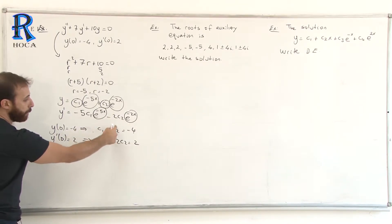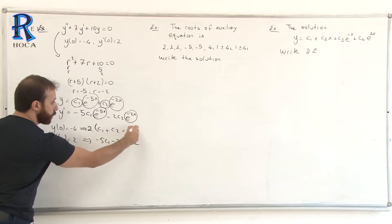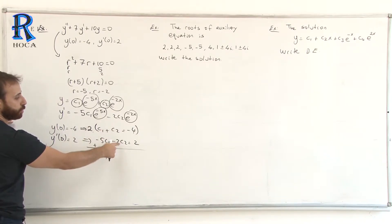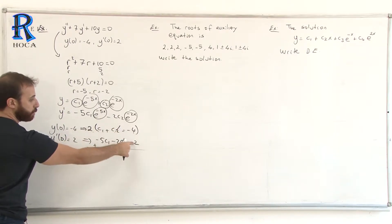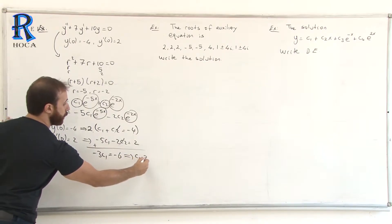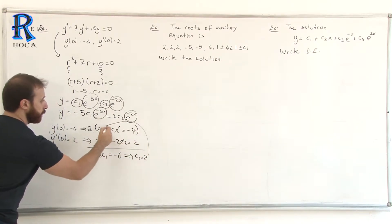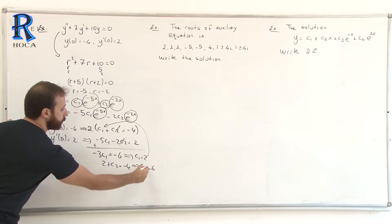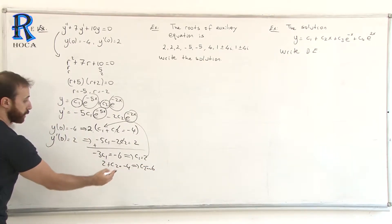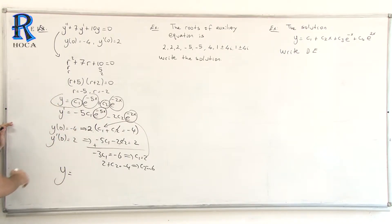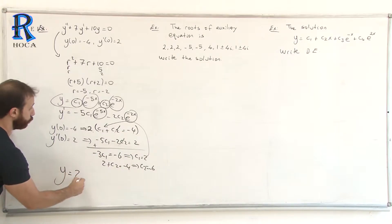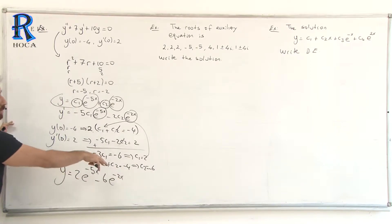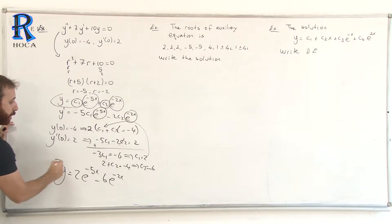Let's use the elimination method to eliminate C2. Multiply the first equation by 2: we get 2C2 - 2C2 removed, and 2C1 - 5C1 = -3C1. On the right side: -8 + 2 = -6. So C1 = 2. Substituting C1 = 2 back: 2 + C2 = -4, therefore C2 = -6. The final solution is y = 2e^(-5x) - 6e^(-2x).